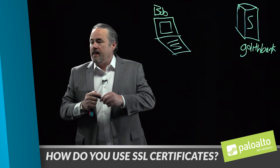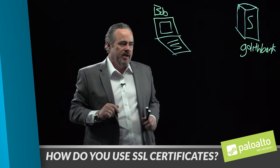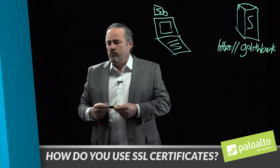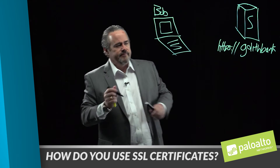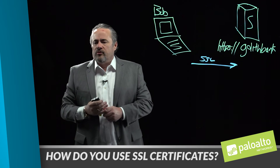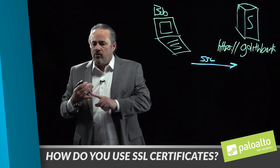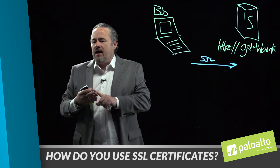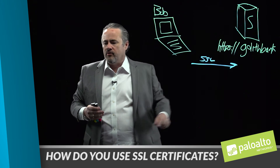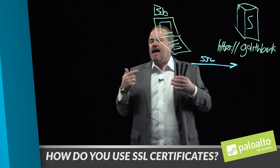When Bob wants to do his online banking, he opens his browser and goes to GoliathBank.com. As a secure connection, it's going to be HTTPS GoliathBank.com. The first thing Bob's browser does is say, let's do SSL together. Bob's browser sends three pieces of information to the server at GoliathBank: the key algorithms it can support, the ciphers it can support, and a message hash to authenticate messages. GoliathBank chooses one of each from those three categories and then sends its certificate and a public key.